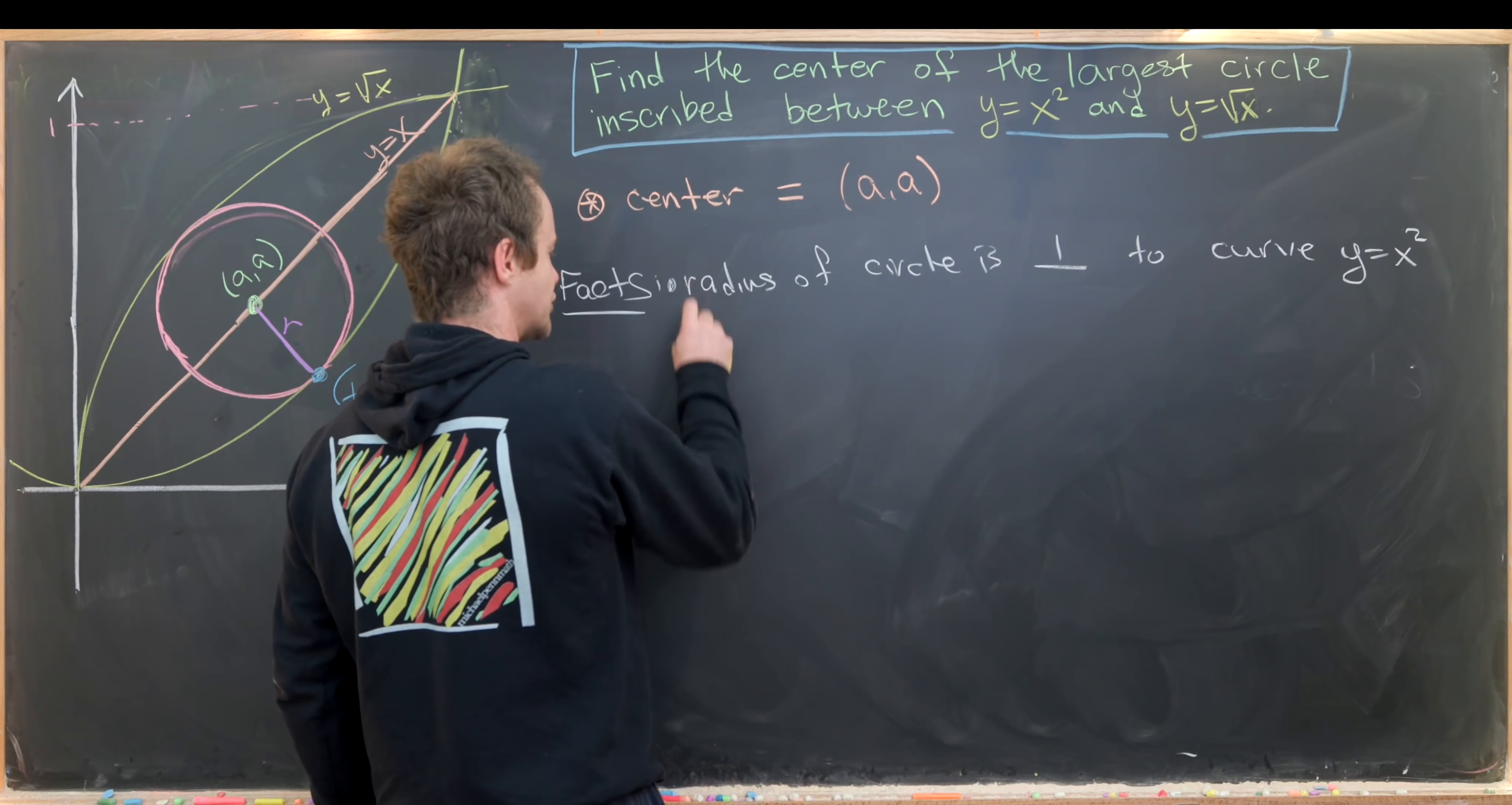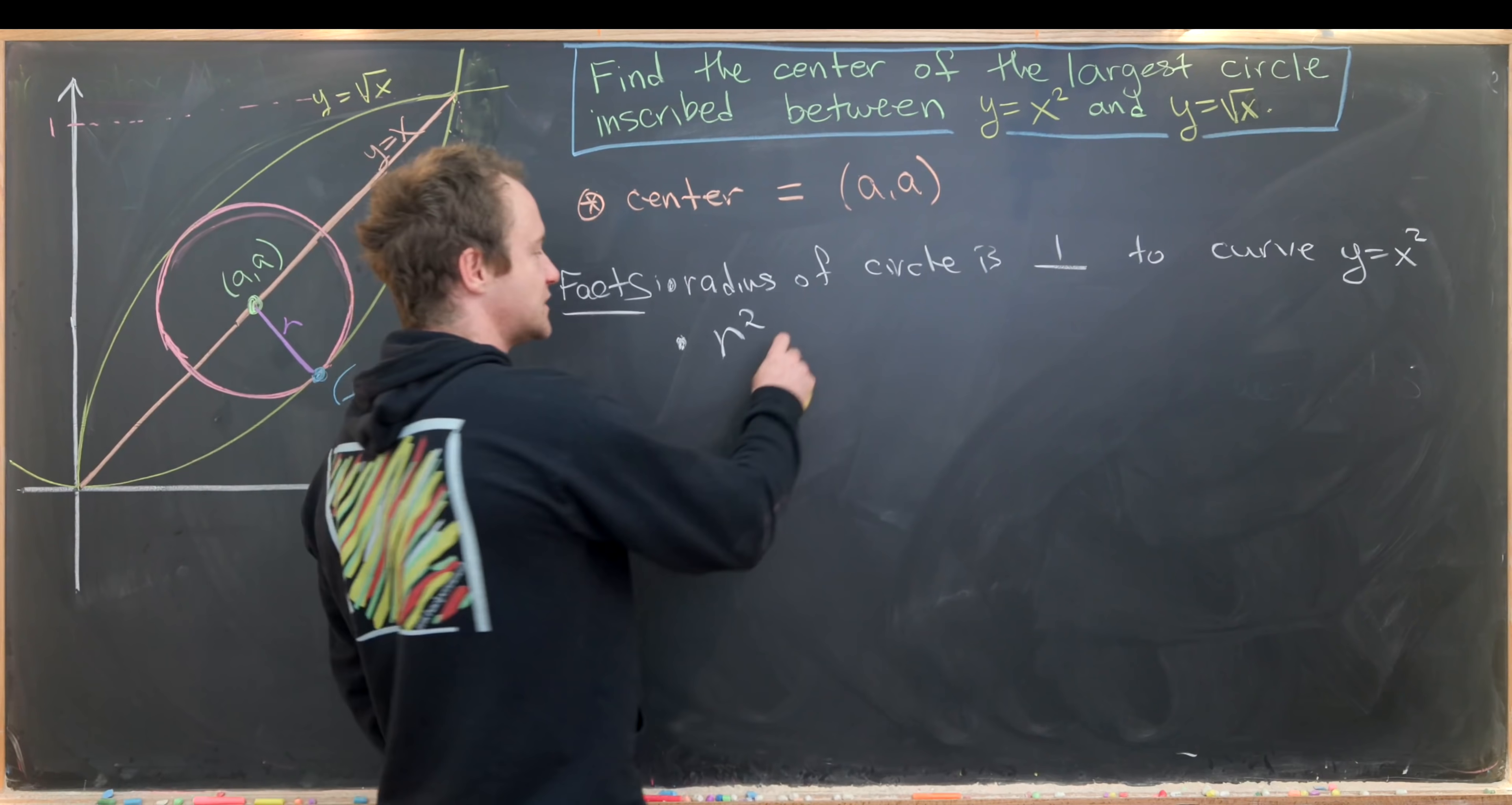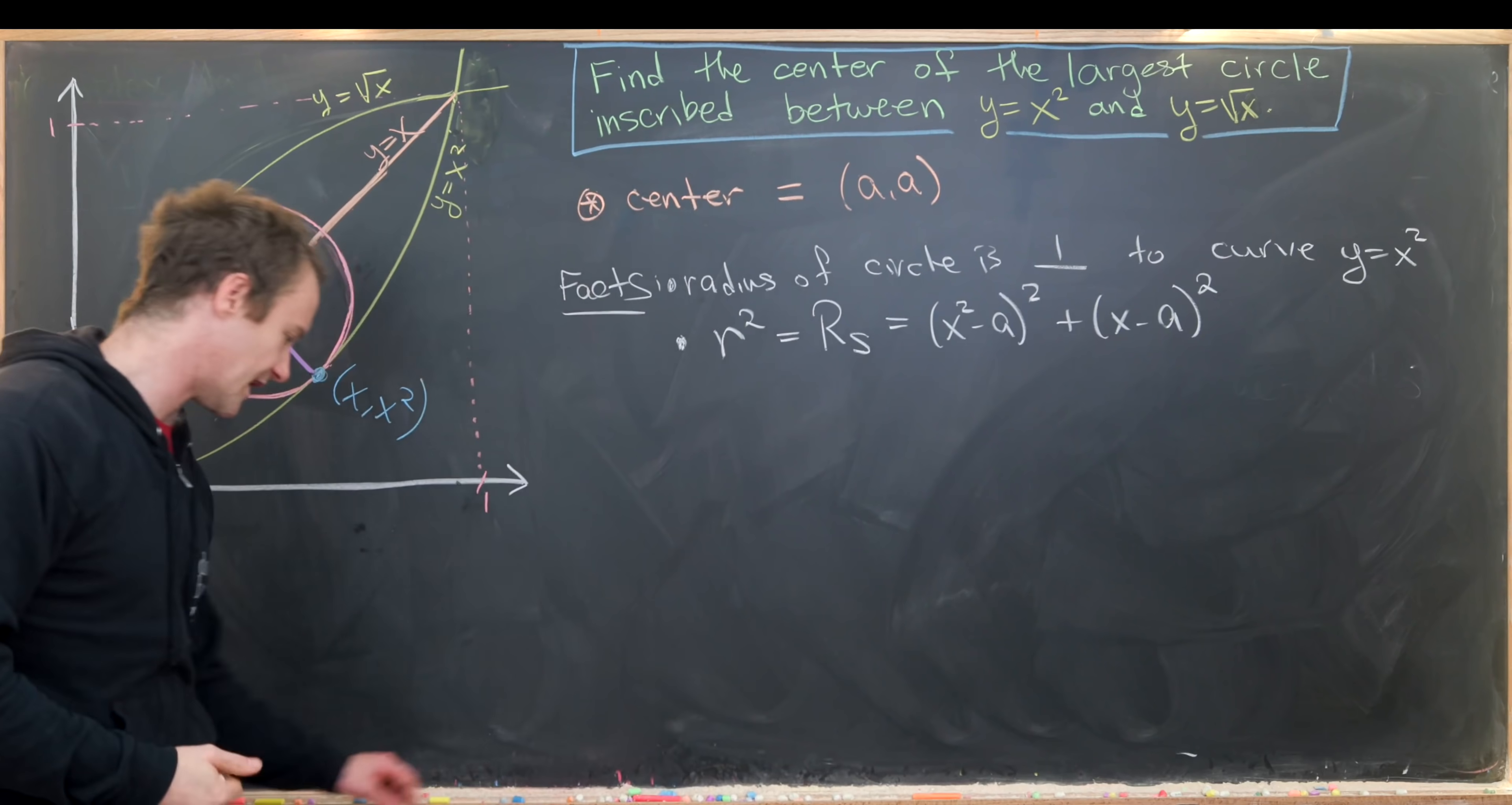Our other fact is that we can measure the radius using the distance formula. Instead of measuring the radius, I'll measure the radius squared. I'll call this function capital r sub s, and that will be x squared minus a squared plus x minus a squared.